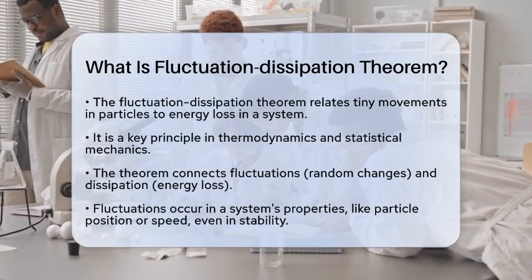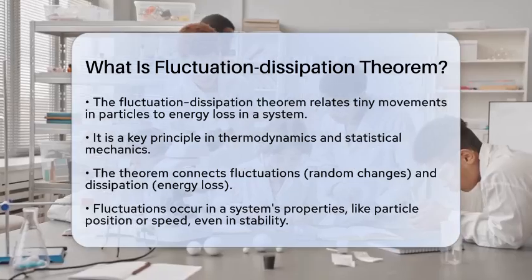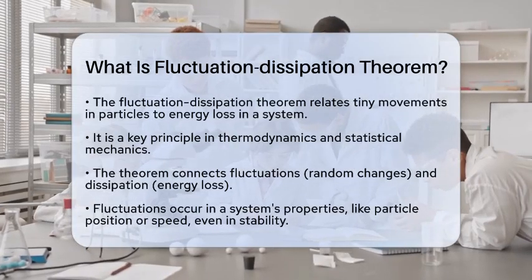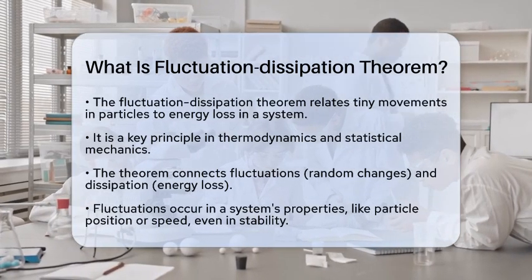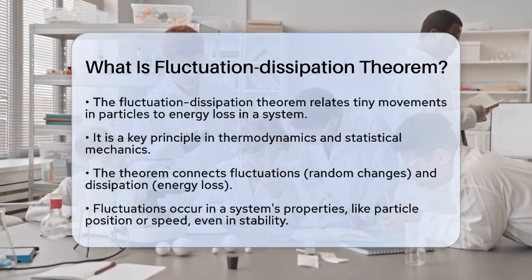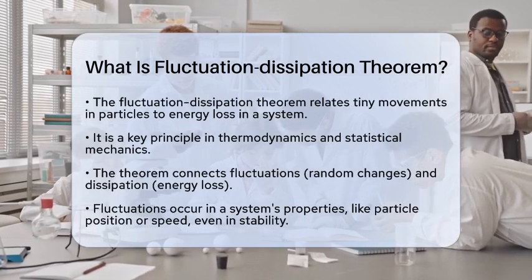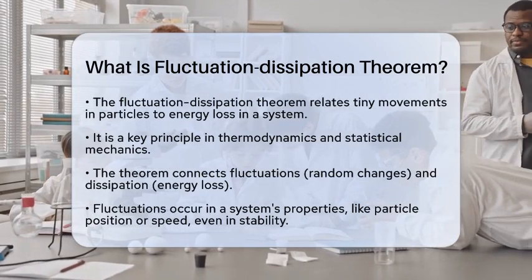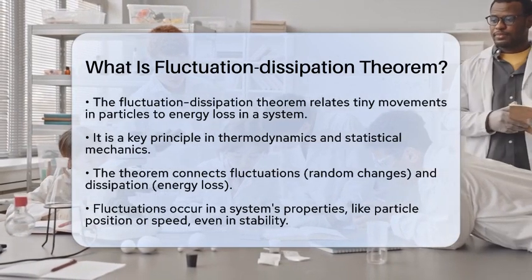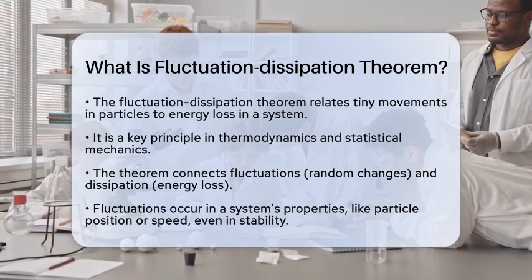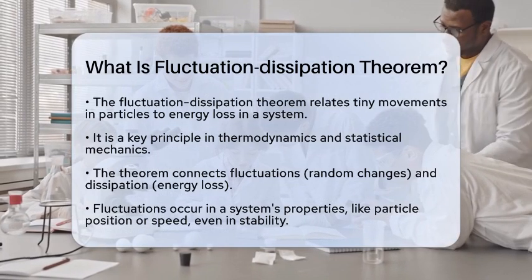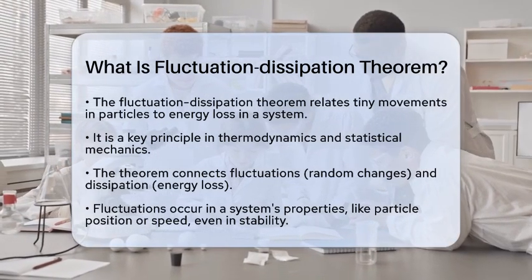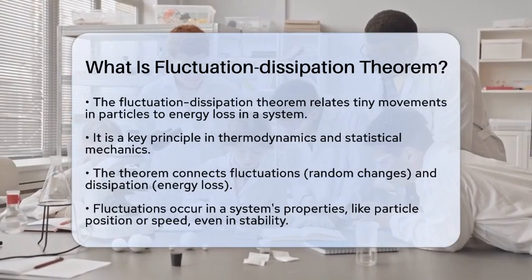Fluctuations are those random changes in a system's properties, like the position or speed of particles, even when everything seems stable. Dissipation, on the other hand, is about energy loss from a system, often as heat, when it is disturbed.